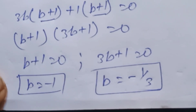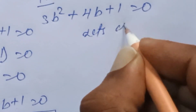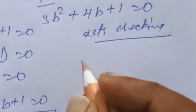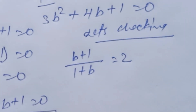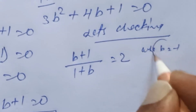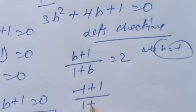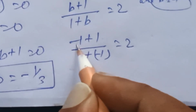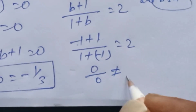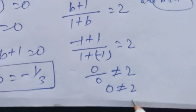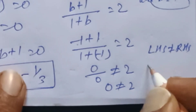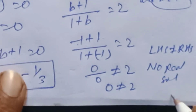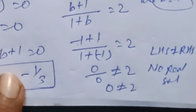Let's check whether these values are correct. According to the question, b plus 1 divided by 1 plus b is equal to 2. Putting b equals minus 1: minus 1 plus 1 divided by 1 plus minus 1 gives 0 divided by 0, which does not equal 2. So LHS does not equal RHS — no real solution. Thank you for watching my video. Please subscribe to my channel. Take care, bye bye.